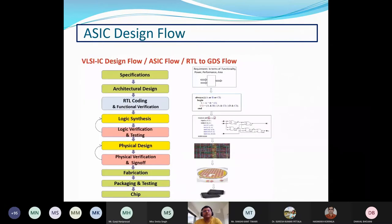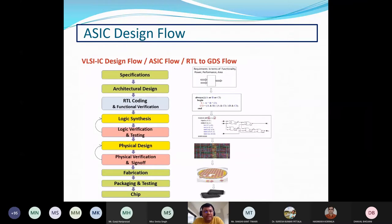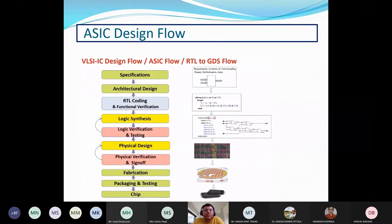He begins with an analogy: imagine thinking of a chip that senses heartbeats, displays them, operates at low power, and has a colorful display — these become your specifications. Any idea for a circuit that can capture market is appreciated, and people try to translate that into working silicon. Specifications get translated into architectural designs, and once requirements are finalized, RTL coding and functional verification begin.